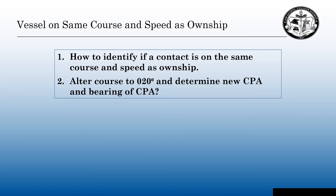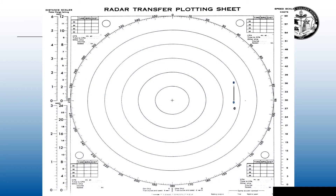Vessels on the same course and speed as own ship: we're going to look at how to identify contacts on the same course and speed as our own ship, then alter course to 020 degrees and determine a new CPA and bearing of CPA. Here's my E to R — my own ship's true course and true speed, or true motion. When we plot our M06, we get a range and bearing, and it's exactly the same as our R00. R00 and M06 land on top of one another. E to R is our true course and speed; E to M is the contact's true course and speed. So this contact has to be on the same course and speed as our own ship.